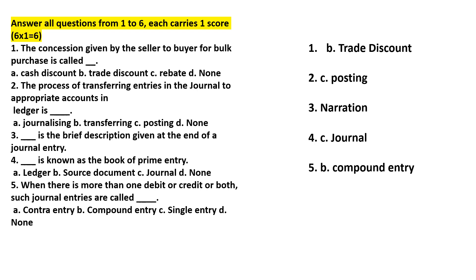We will be able to get the journal entry. The journal entry is going to transfer to the ledger. There is a brief discussion given at the end of the journal entry. The journal entry is known as the book of primary entry.